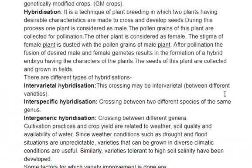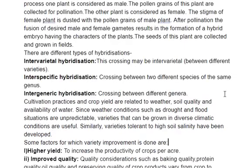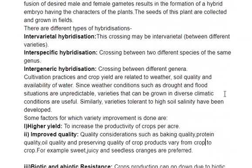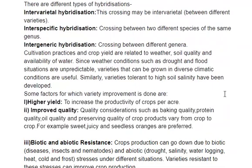Cultivation practices and crop yields are very dependent on weather, soil quality, and availability of water. Situations like snow or floods are unpredictable, but varieties grown in diverse conditions can grow properly. Varieties tolerant to high soil salinity can also be developed.